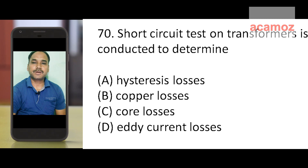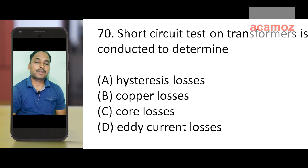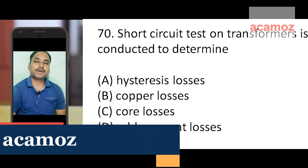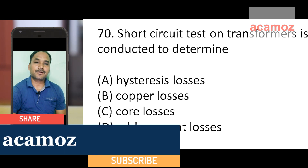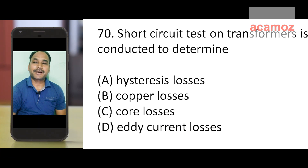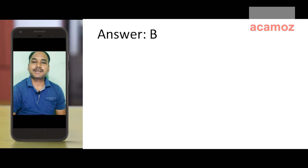Last question: the short circuit test is conducted to determine — options: stress loss, copper loss, core loss, and eddy current loss. The short circuit test is conducted to determine copper loss, so option B is the correct answer.